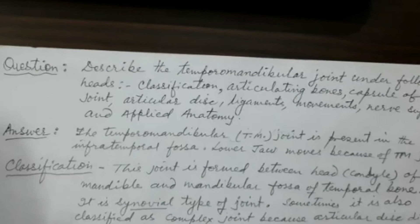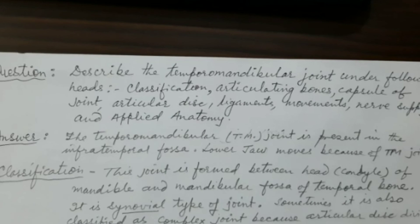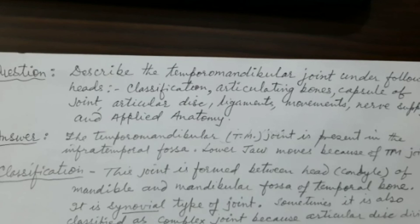This completes the important question on the temporomandibular joint. We have covered classification, articulating bones, capsule of the joint, articular disc, synovial membrane, ligaments, movements, nerve supply, and applied anatomy. Thank you very much for watching this video.